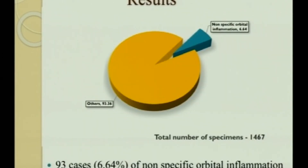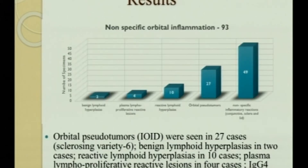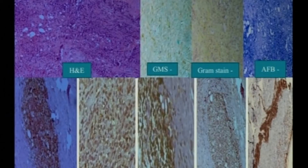In total, 93 cases were analyzed; 6.64% of non-specific orbital inflammation were reported out of 1,467 specimens. Orbital pseudotumor, now known as IOID, was seen in 27 cases, where sclerosing variety was seen in 6 cases, benign lymphoid hyperplasia in 2 cases, reactive lymphoid hyperplasia in 10 cases, plasma lymphoproliferative reaction in 4 cases, IgG4-related disease in 1 case, and non-specific inflammatory reaction in the conjunctiva, sclera, and lids were seen in 49 cases.